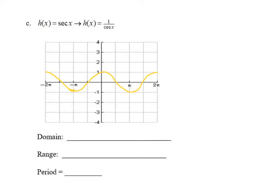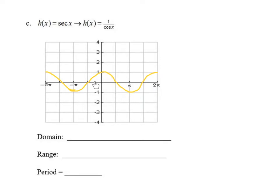Now we're looking at the secant graph. We know secant is the reciprocal of cosine. I've sketched in the graph of cosine — if you don't have a different color, use a dashed graph to indicate it's not the final curve. Use the same technique we did for cotangent: think about the output values for cosine and take their reciprocals. Pause the video and try to sketch the curve for secant.